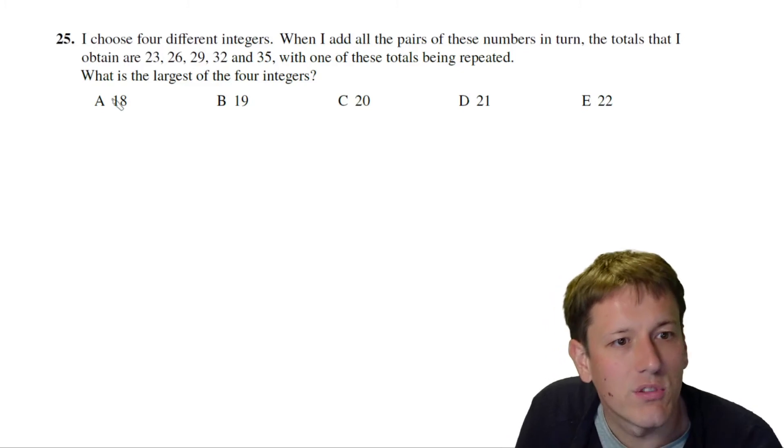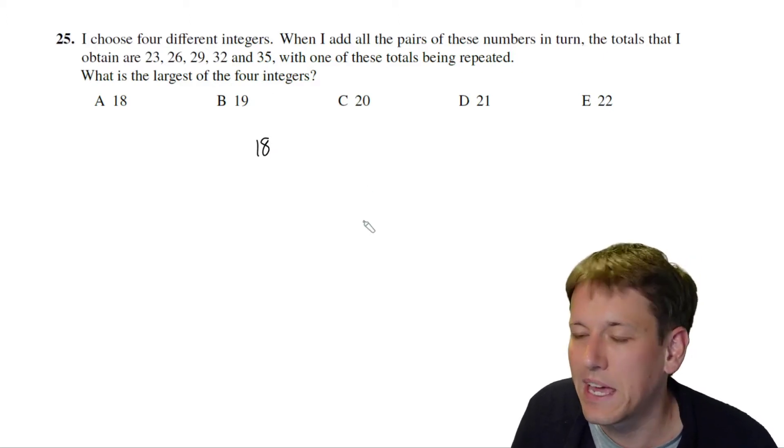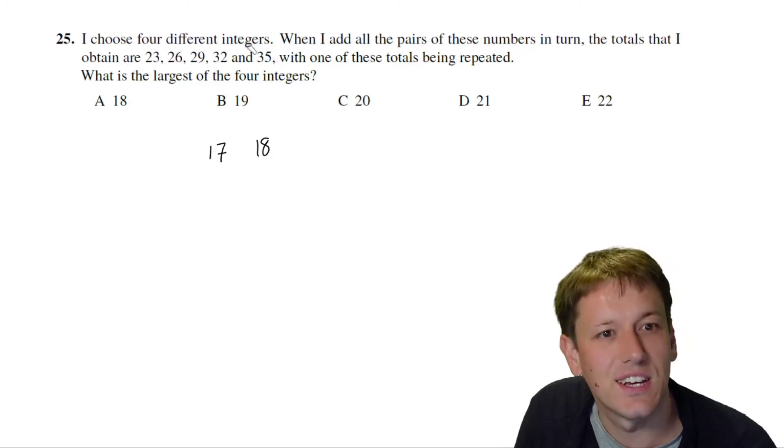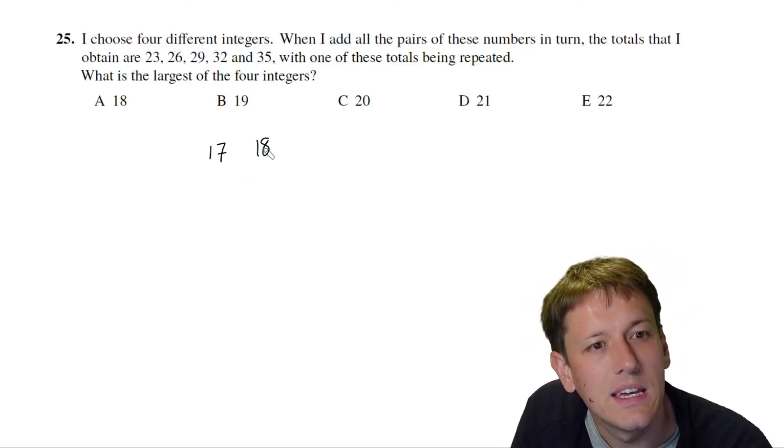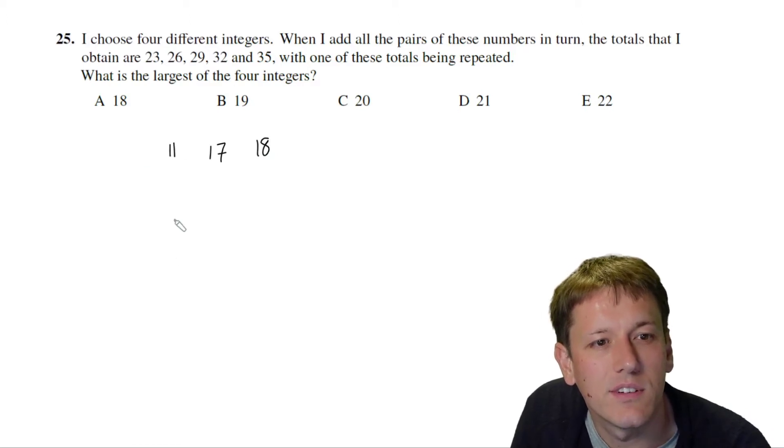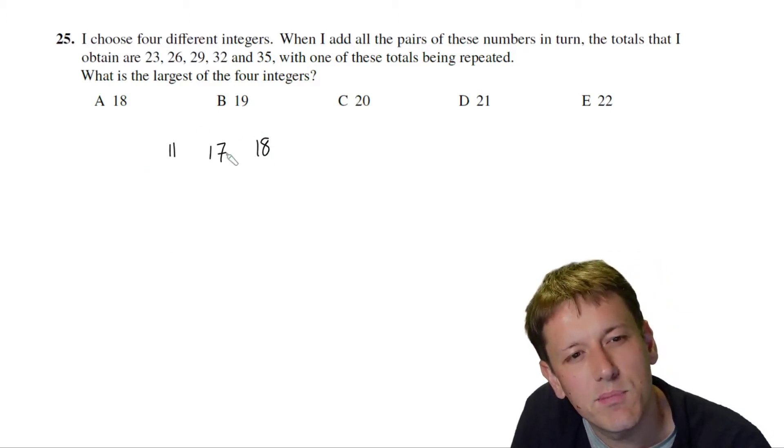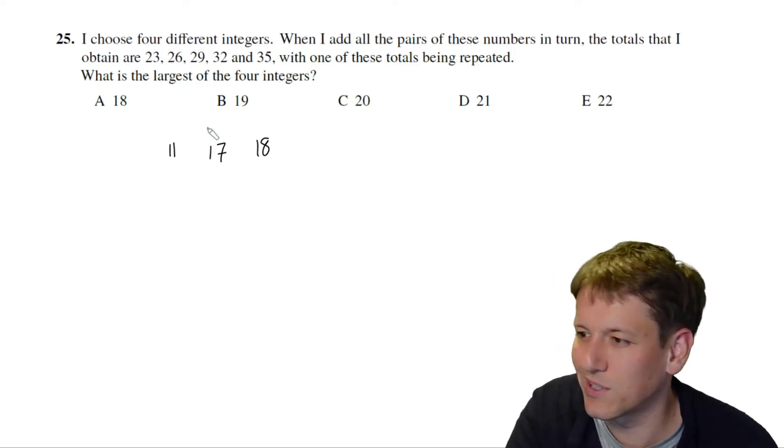So let's just go through in turn. Imagine the answer was 18. The largest number is 18. To get a total of 35 being the biggest pair, the next one is going to have to be 17. 17 plus 18 is 35. Now I'm going to have to now make 29 as one of the pairs as well. So it could be 18 plus 11, but that would give me 29. But 11 plus 17 would have to be one of the pairs. That would be 28, and that's not one of the numbers we're looking for.